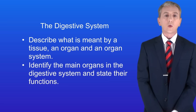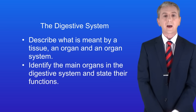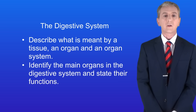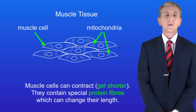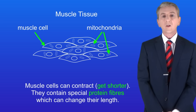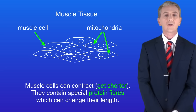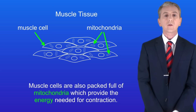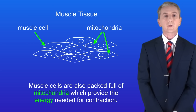In a previous video we saw that cells are often specialized — in other words they've got adaptations to help them carry out their function. A good example of this is muscle cells. These can contract, in other words get shorter, because they contain special protein fibers which can change length. Muscle cells are also packed full of mitochondria which provide the energy needed for contraction.